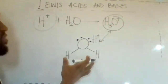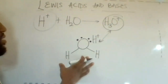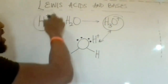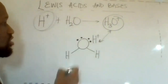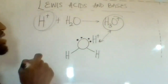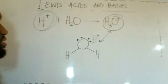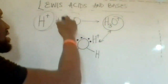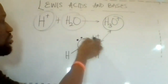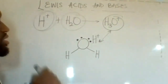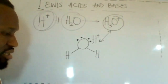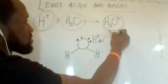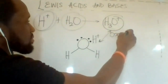H₃O⁺ is represented as this. H⁺, accepting this lone pair of electrons, is known as a Lewis acid. But water, in this case, donating the lone pair of electrons, is known as a Lewis base. The product here is the oxonium ion.